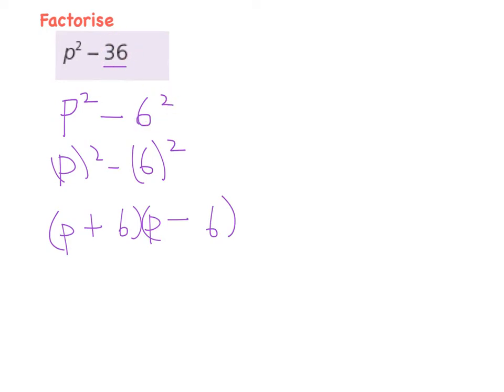Our next example here is 49m squared minus 9n squared. So first things first, I've spotted the minus, so that's leading me to think that it might be a difference of two squares, and then I can spot that 49 and 9 are square numbers.